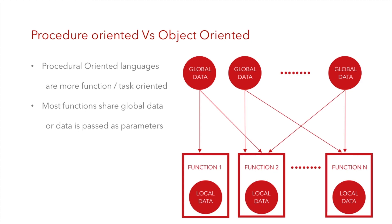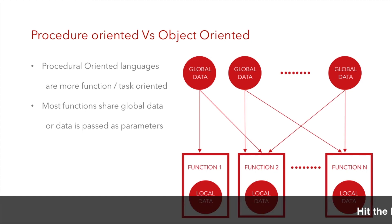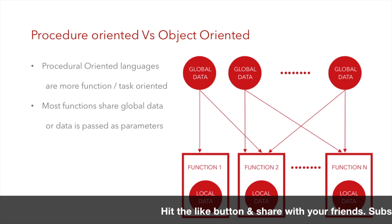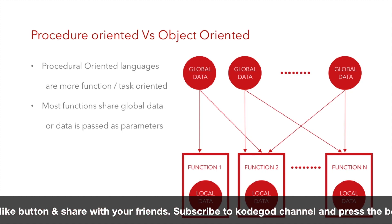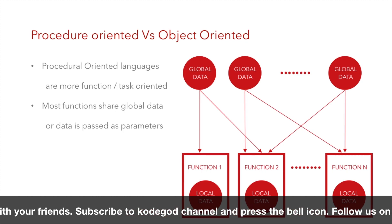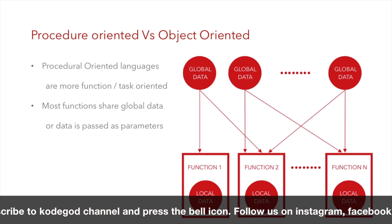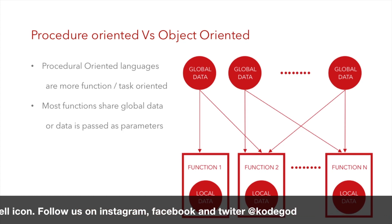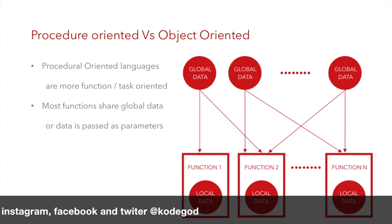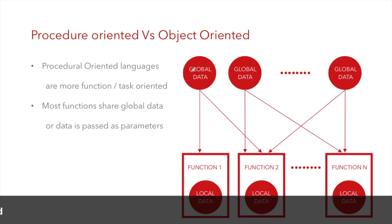Procedure oriented languages work more like a function, or they work on a task, so we can say that these languages are more function or task oriented. Most functions share common or global data with each other, or data is passed as parameters. These are the only two possibilities in procedure oriented languages like Pascal or C.